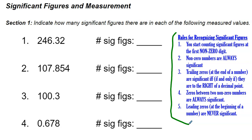In number one, we apply rule one: start counting at the first non-zero digit. The first digit that is not a zero is where we begin. Looking at this value, there are no zeros, so every single digit is significant. Both rules one and two apply here. Starting at the two, we count one, two, three, four, five significant figures. So the answer for number one is five.